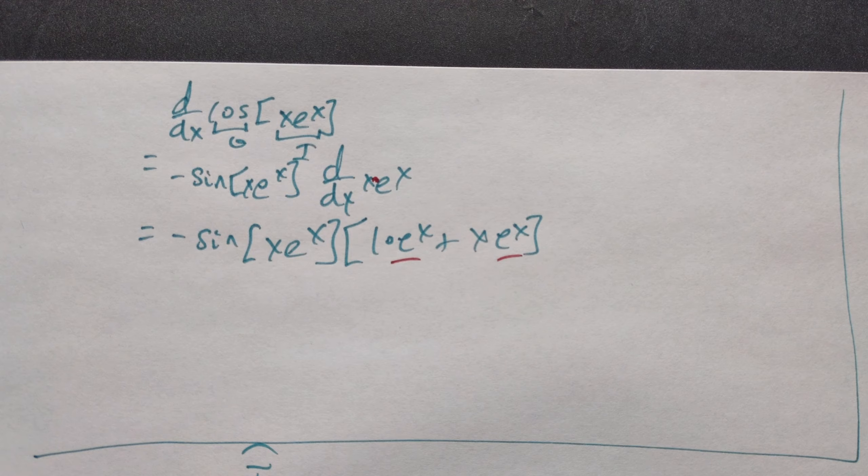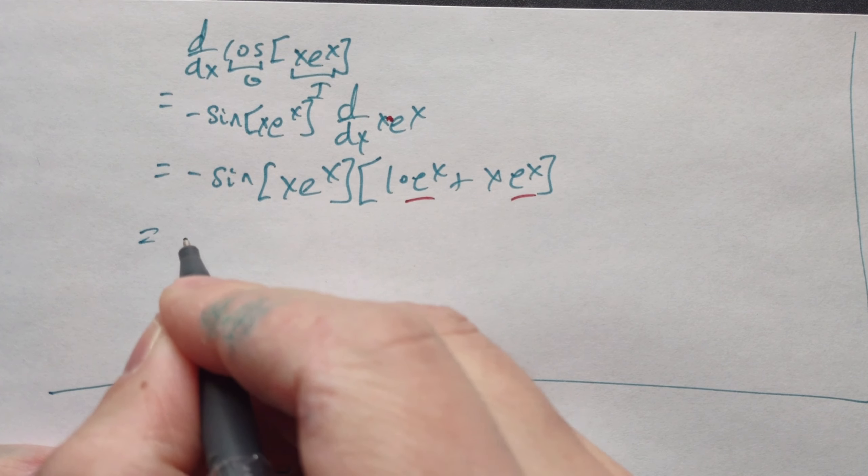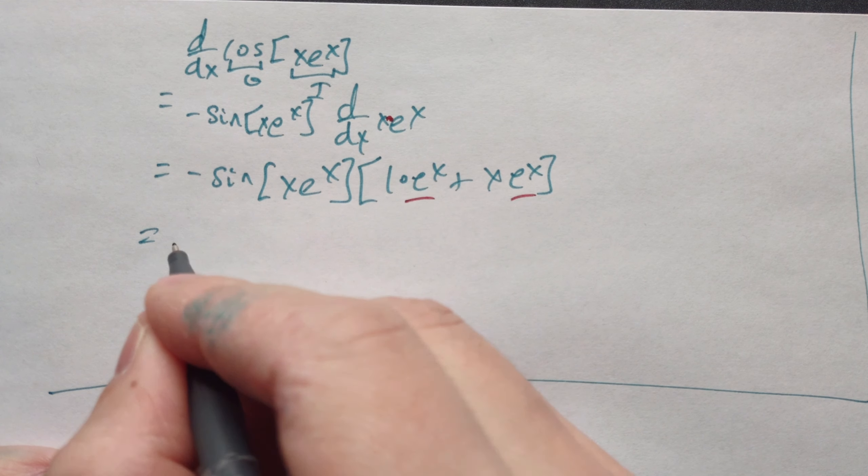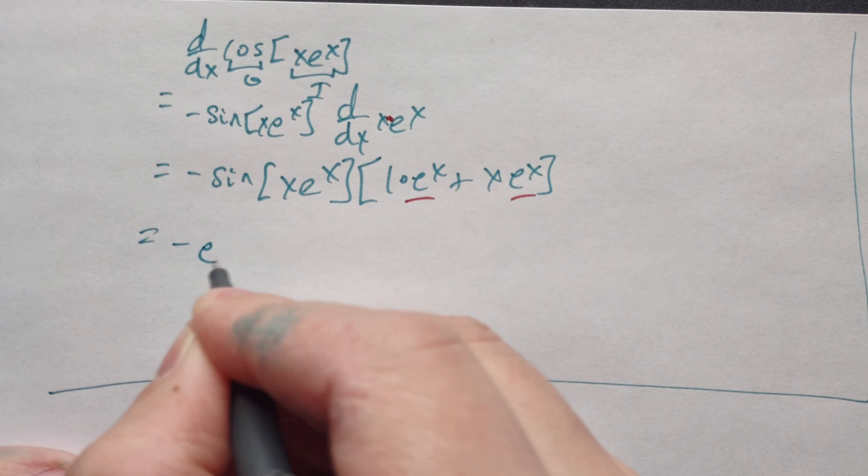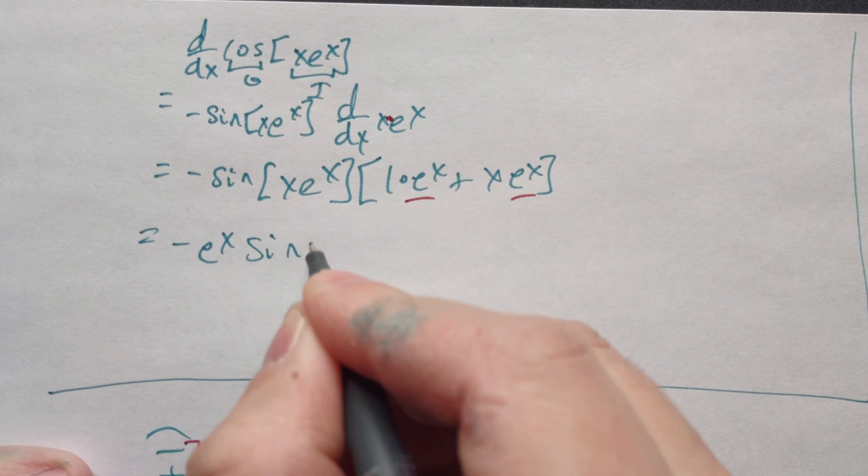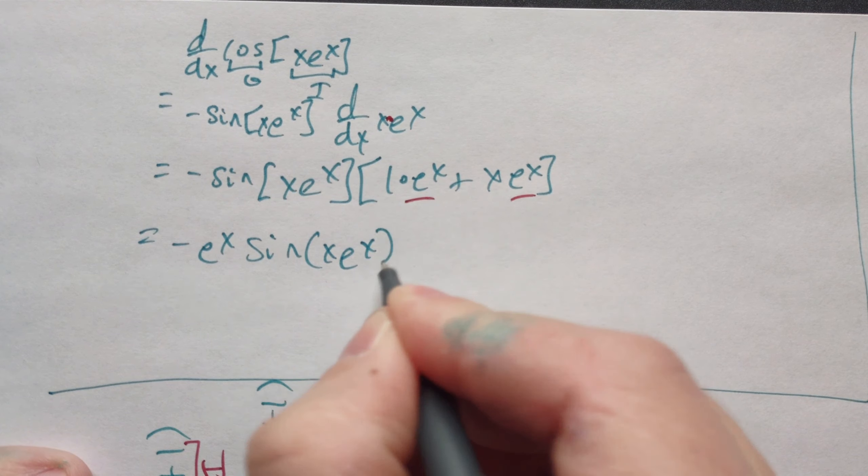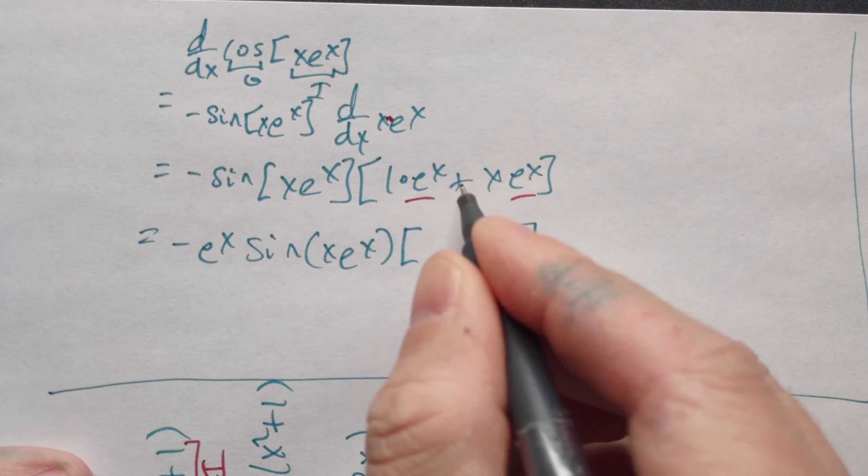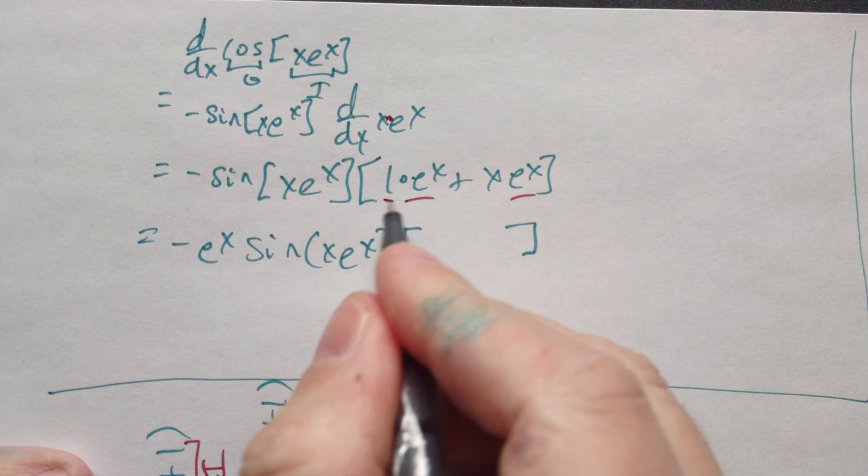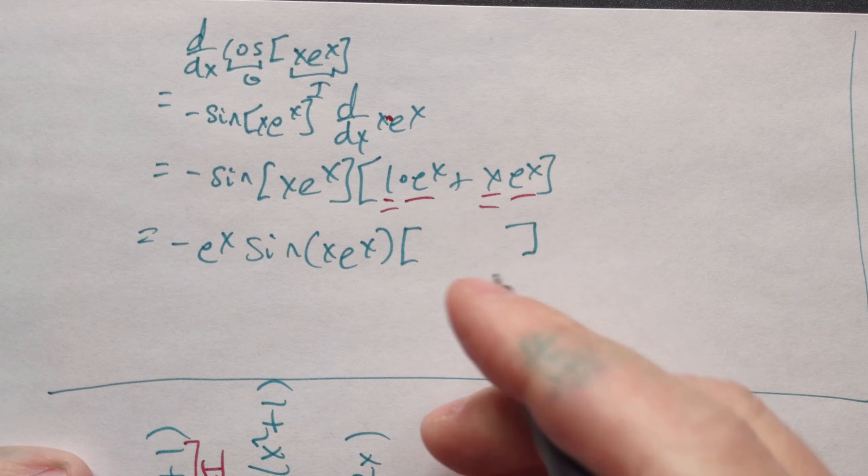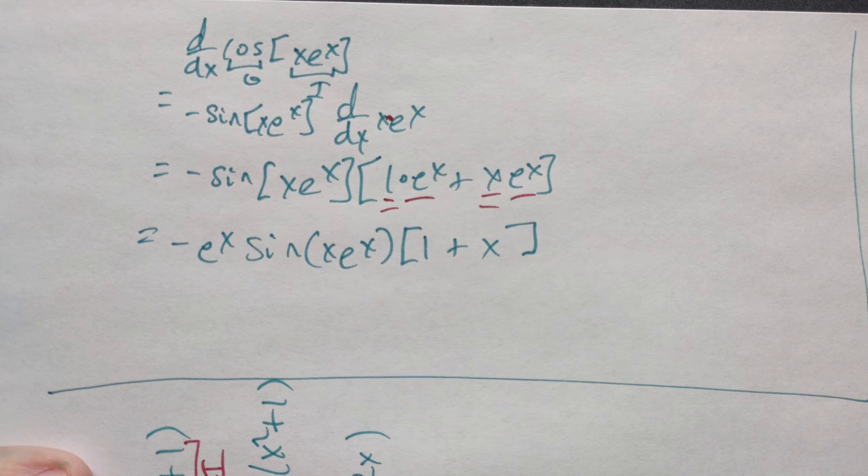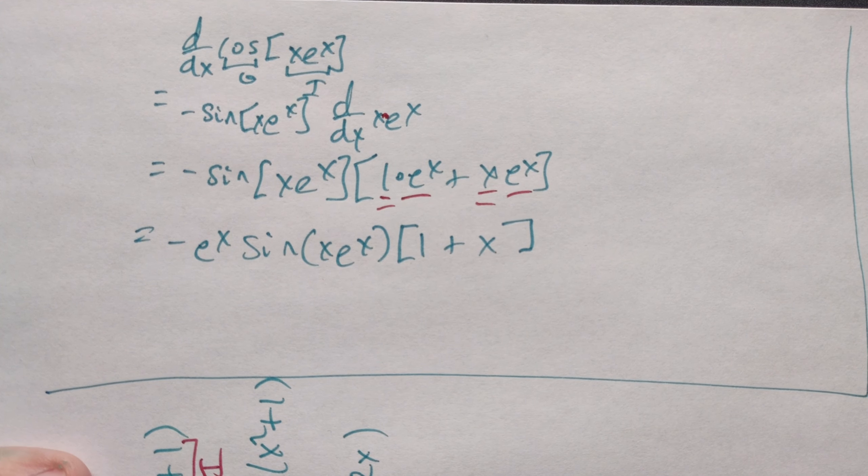Notice that e to the x is a common factor here, so you can put that e to the x all the way out front. It becomes negative e to the x times the sine of x e to the x, and then within brackets or parentheses you can put the remaining one and the remaining x from here, so it's going to be one plus x. Answer.